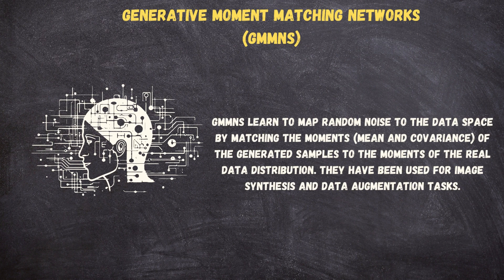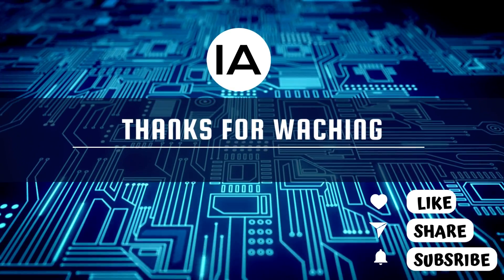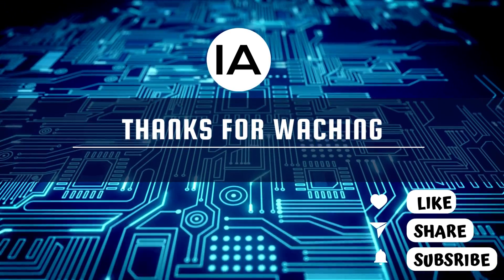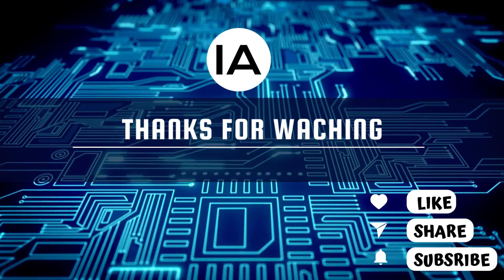GMMNs learn to map random noise to the data space by matching the moments — mean and covariates — of the generated samples to the moments of the real data distribution. They have been used for image synthesis and data augmentation tasks. Thanks for watching the video; don't forget to like, share, and subscribe to Internalize AI. See you in the next video.